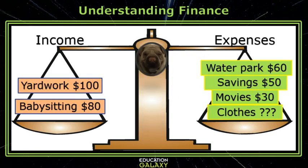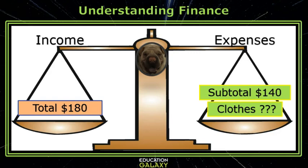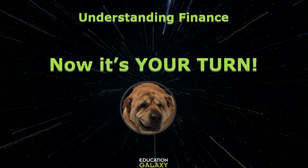Let's say that I'm just a kid and I do yard work and babysitting to earn some money. These are all the expenses I have this month: I'm going to the water park, I put money in savings, I'm going to the movies, and I'd also like to buy some clothes. How do I figure out how much money I have for clothes? First, go add up each side. That's right, Molly. My total income is $180. My subtotal of expenses is $140. If I take the $180 and subtract the $140, that tells me that I have $40 that I can spend on clothes. Okay kids, it's your turn to answer some questions.